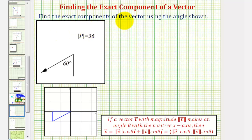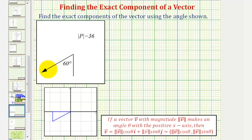We want to find the exact components of the vector using the angle shown below. Notice how we're given the magnitude of the vector is 36, and we're assuming the initial point of this vector is at the origin. Therefore, this would be the y-axis and this would be the x-axis.